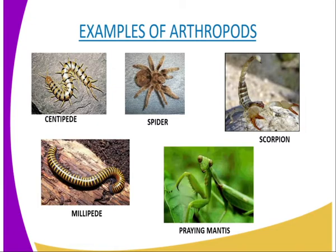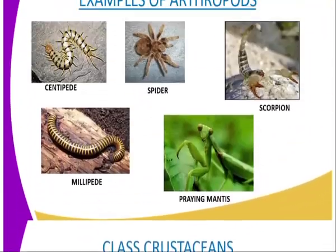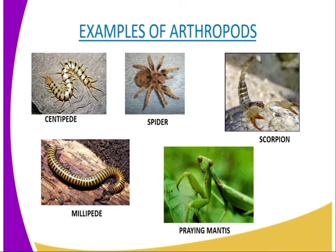The sexes are both separate, meaning it is possible to get a male millipede and a female one, and also a male spider and a female one. The phylum is divided into five main classes, which include the crustaceans, the chilopoda, the diplopoda, arachnida, and insecta.